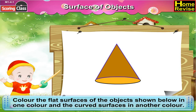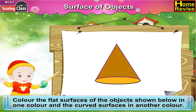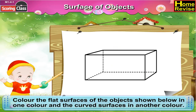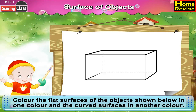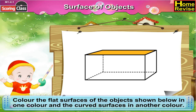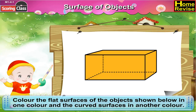Now if you notice the next object, well here is the trick in it. You will find all flat surfaces and no curved surface. So we will colour them all in a single colour for the flat surface — there is no point of adding the other colour. Am I right? Alright.